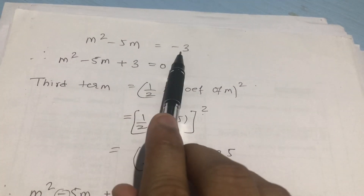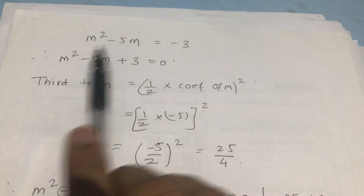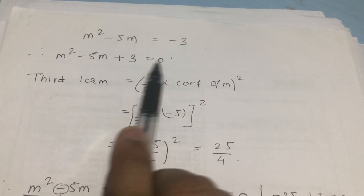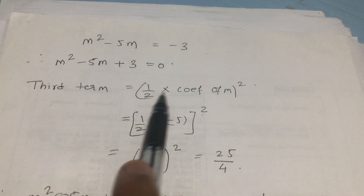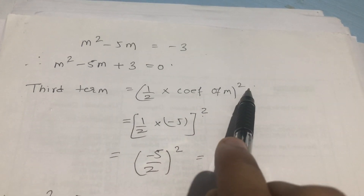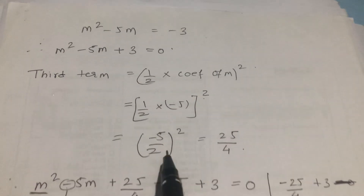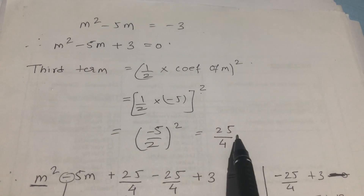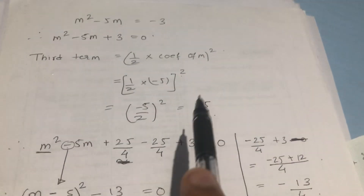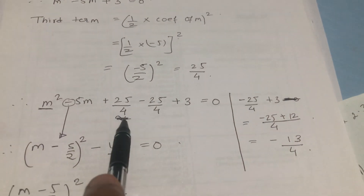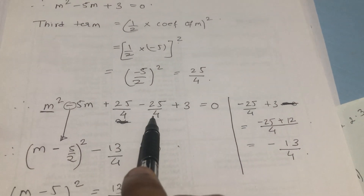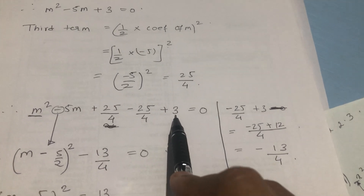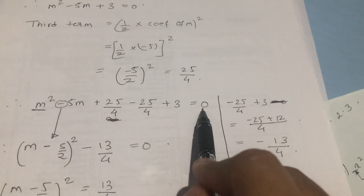The next question is m² - 5m = -3. Bring the 3 to this side, so you have m² - 5m + 3 = 0 written in standard form. Now the third term will be half into coefficient of m, the whole square — that is half into (-5), the whole square, which is (-5/2)² = 25/4. Again you add and subtract 25/4; the 3 (the old third term) remains as it is.